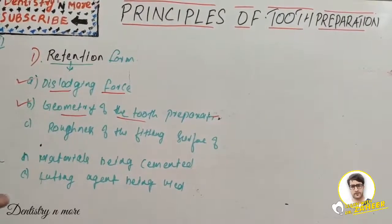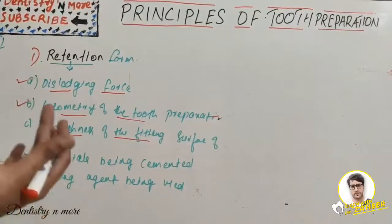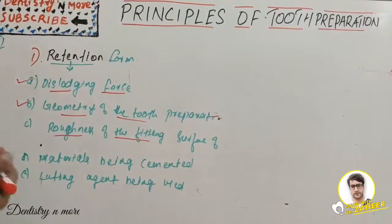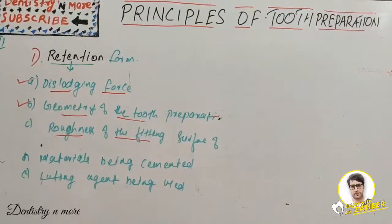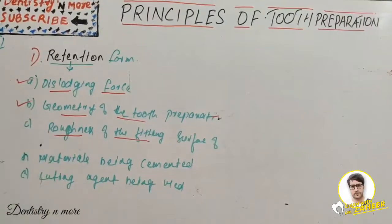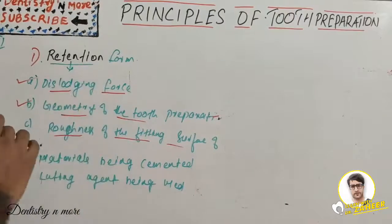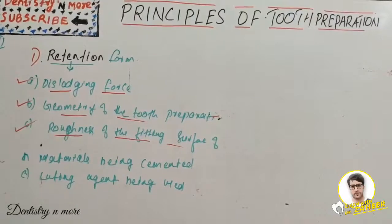Regarding roughness of the fitting surface of the restoration: roughening or grooving the restoration will improve retention, which can be done by air abrasion using 50-micrometer alumina to improve surface energy and surface area. Roughening of the tooth preparation itself is not recommended — only roughness of the fitting surface of the restoration improves retention, not the prepared tooth.